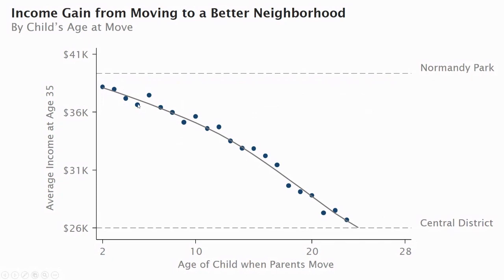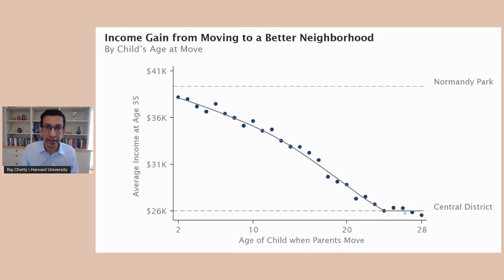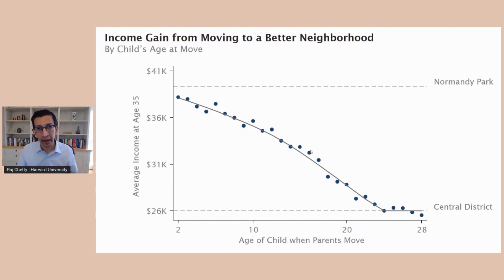The later you make that move from the Central District to Normandy Park, the less of a gain you get. And if you move after you're in your early 20s, you get absolutely no gain at all, and the relationship becomes completely flat. There are three key takeaways from this chart. First, where you grow up really seems to have a significant effect on your life outcomes. Second, what really matters is childhood environment — where you're growing up, rather than where you live as an adult. And third, every extra year of exposure to a better childhood environment improves kids' outcomes in the long run. To make a medical analogy, there's a dosage effect here — if you move to a better area when you're 10 instead of 11, you continue to get gains.